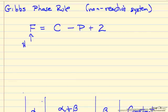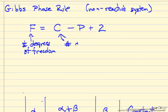F is the number of degrees of freedom, C is the number of components, the number of different chemical compounds in the system, and then P is the number of phases.